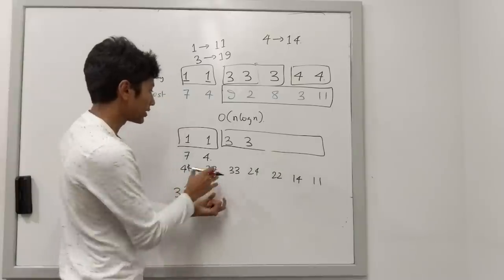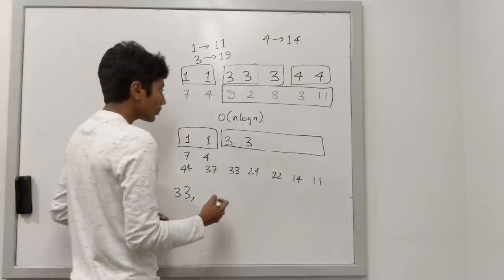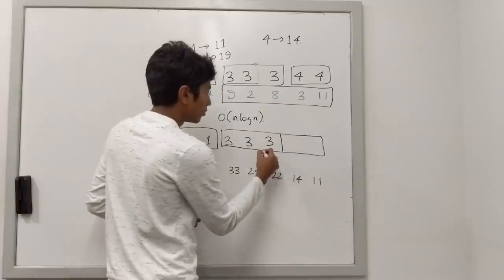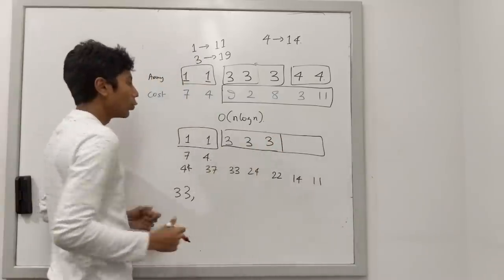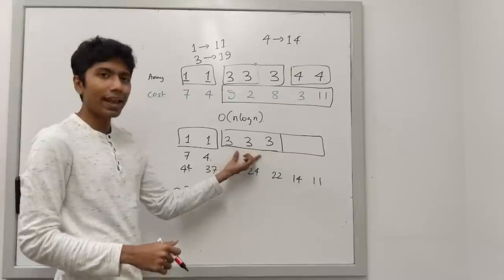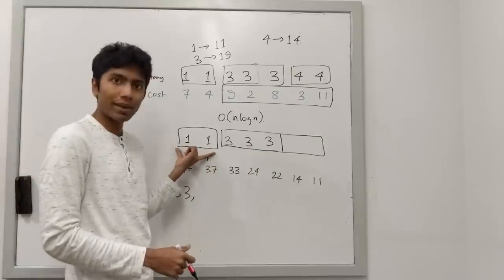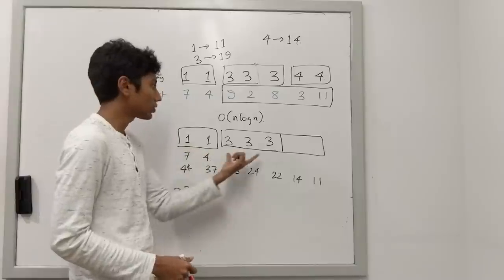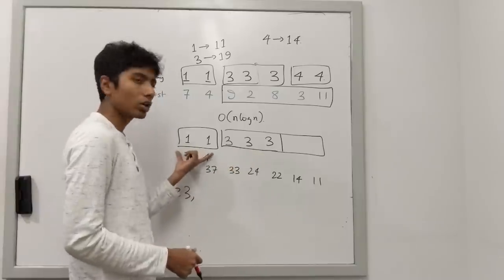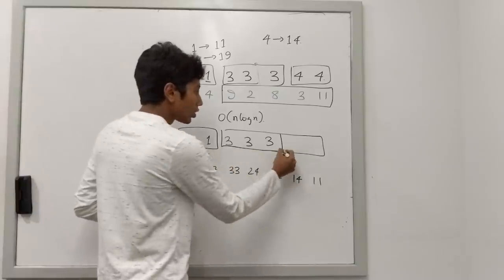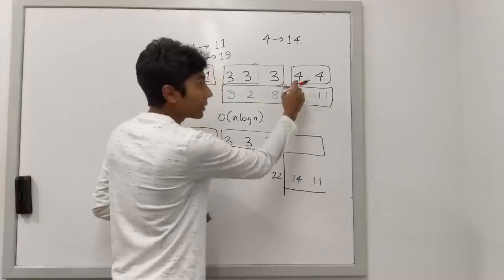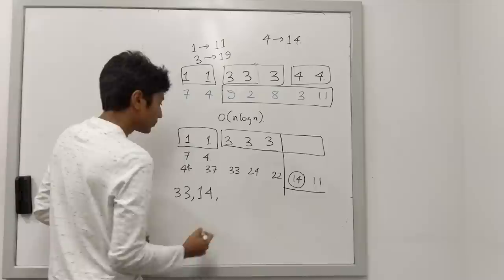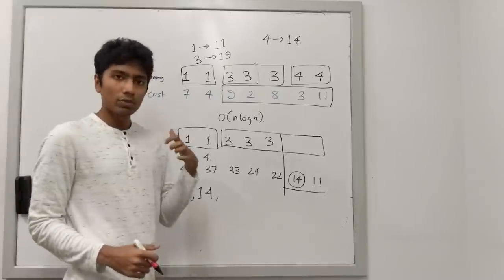Let's add 3 as a potential maximum. With 3 as the maximum, do we have any issues with the remaining array? The answer is no — 3 has a frequency of 3, and with n=5, 3 ≥ 5/2, so it works. The cost of removing the two remaining 4s is 14. I note that down.